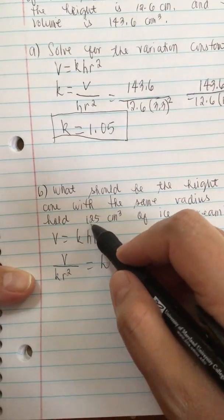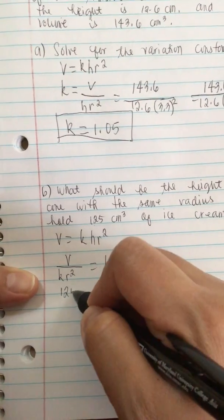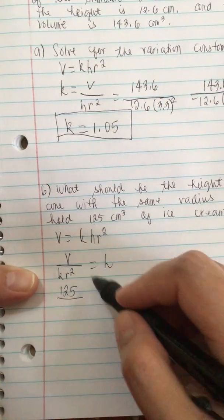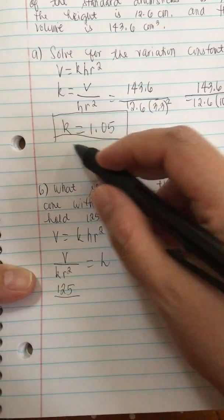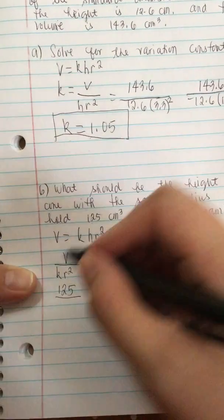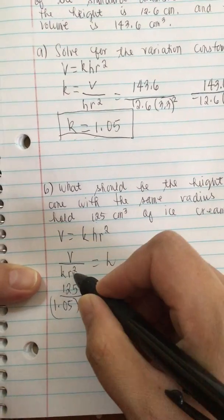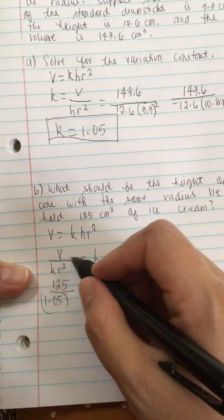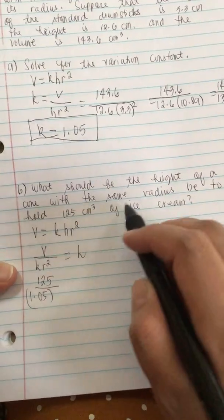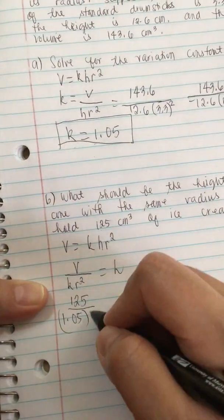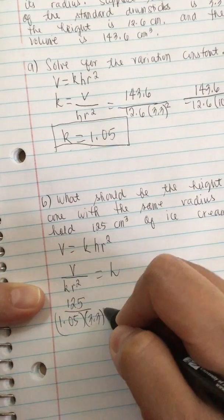The volume is 125 over K. We found K to be 1.05, so 1.05 times R squared, 3.3 squared.